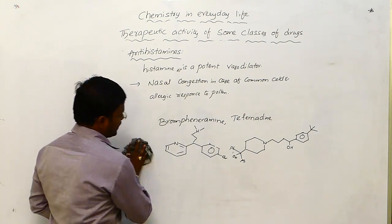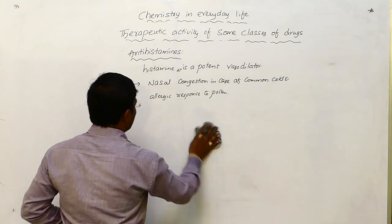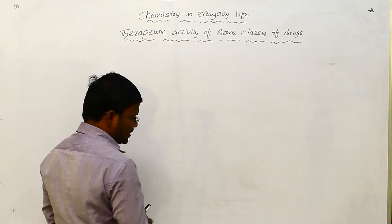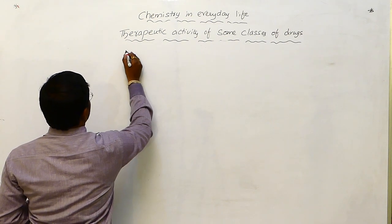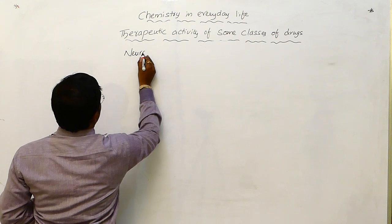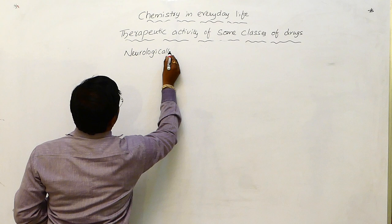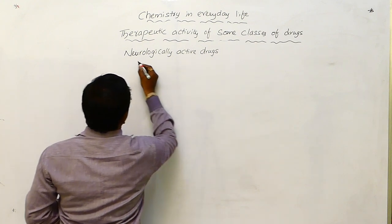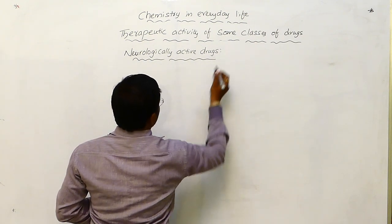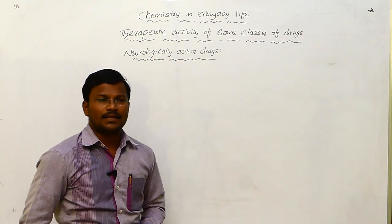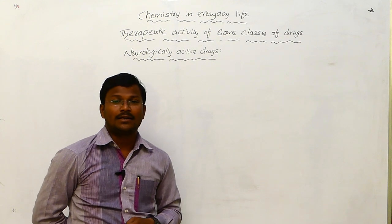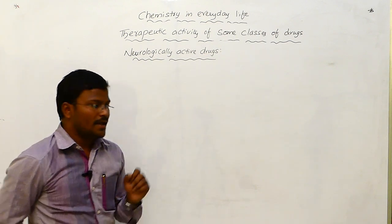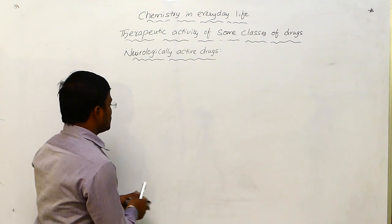This is about anti-histamines. Let us have one more important class of chemical substances — drugs that show biological activity — that is, neurologically active drugs. What are neurologically active drugs? Generally, tranquilizers and analgesics come into neurologically active drugs. Let us learn them separately.